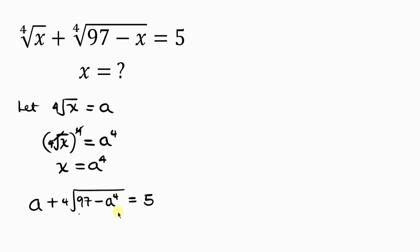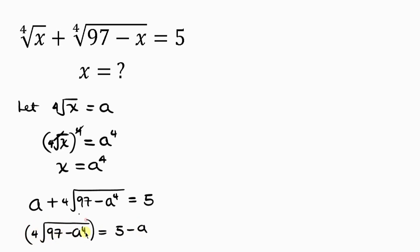Our next step is to move a to the right-hand side, leaving the radical on the left. So we have the fourth root of 97 minus a⁴ equal to 5 minus a. Now let's get rid of this radical by raising both sides to the power of 4. The fourth power cancels the fourth root, leaving 97 minus a⁴ on the left.